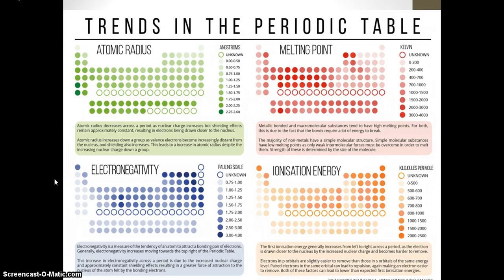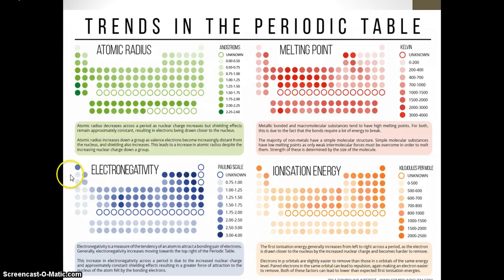Electronegativity increases as we move to the right, and we don't have electronegativity values for noble gases. Electronegativity also decreases as we move down — it's probably easier to see this with the halogens. Try to explain using your own words why electronegativity increases to the right and decreases going down — think about Coulomb's Law, effective nuclear charge, and what happens to the radius. Ionization energy is very similar: it increases to the right and decreases as we move down the periodic table.